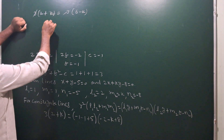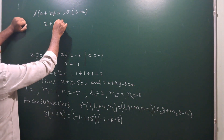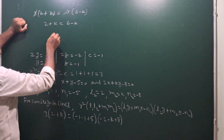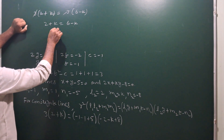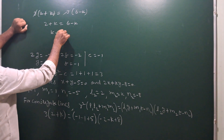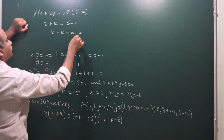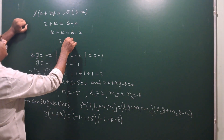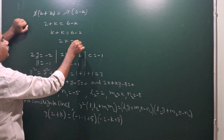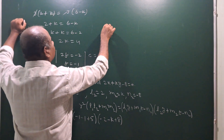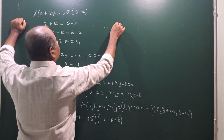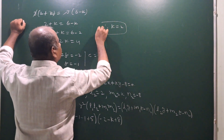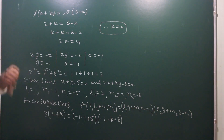The 3 cancels on both sides, giving 2 plus k equals 6 minus k. Moving k to the left: 2k equals 6 minus 2, so 2k equals 4. Therefore k is equal to 2. That is the answer.